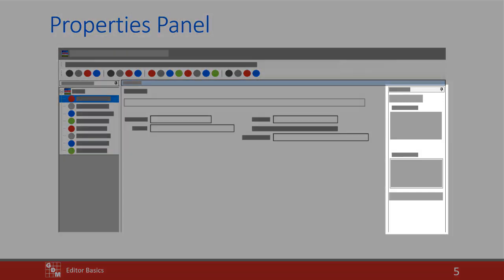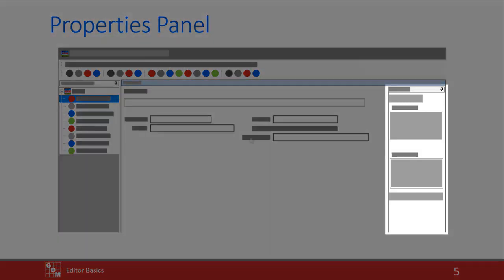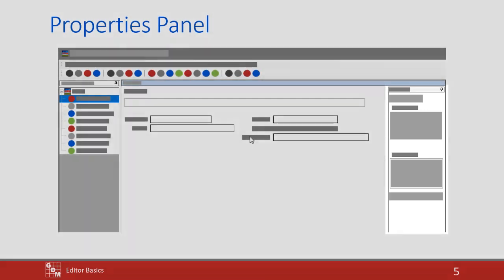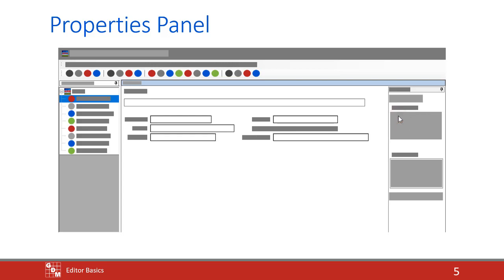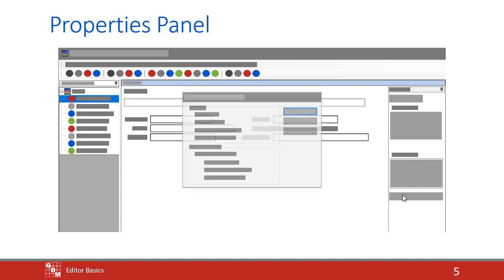Most editors contain a properties panel to supplement the main purpose of the screen. You can use the properties panel to change what fields are displayed, also known as the current view. These panels also contain shortcuts to features and dialogs related to the current editor.